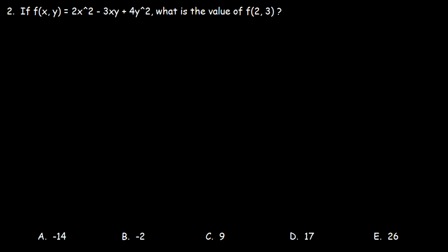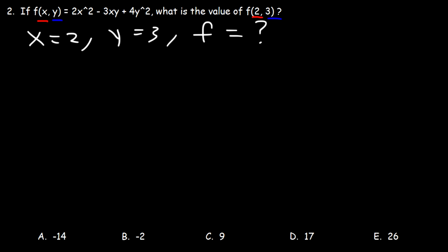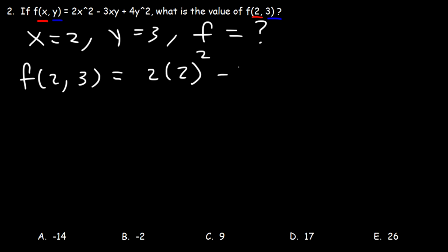Here's another one. If f of x comma y is 2x squared minus 3xy plus 4y squared, what is the value of f of 2 comma 3? We need to realize that x is 2 and y is 3 because they match. So when x is 2 and y is 3, what is the value of the function? All we have to do is plug in the values — everywhere we see an x, replace it with 2, and wherever we see a y, replace it with 3.